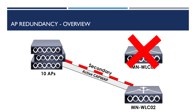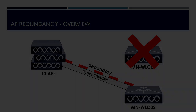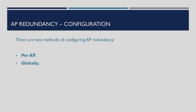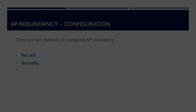Now that we've got an understanding of how APs can be primed with controllers to improve redundancy, let's look at how we can configure this on our APs. There are two methods for the configuration to be applied to our access points: either globally or on a per-AP basis.